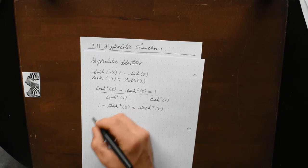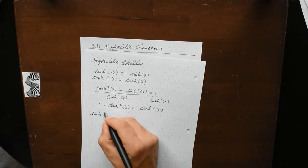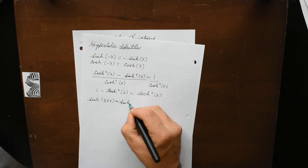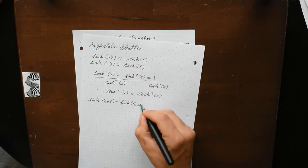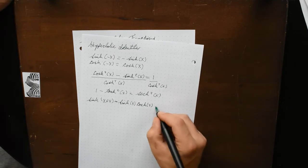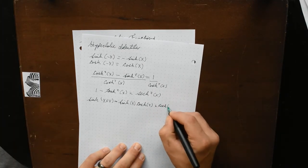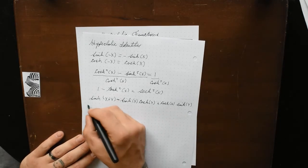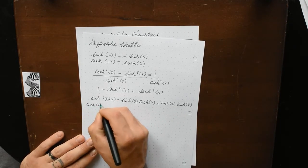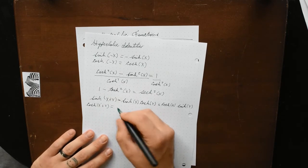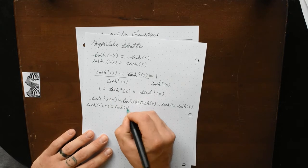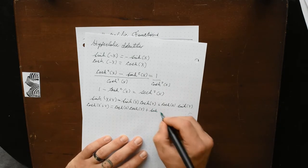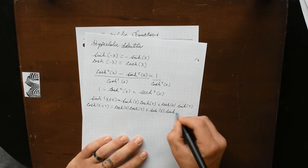We've also got some sum-to-product identities. Sinh(x + y) is equal to sinh(x)·cosh(y) plus cosh(x)·sinh(y). And cosh of x plus y equals cosh(x)·cosh(y) plus sinh(x)·sinh(y).